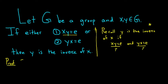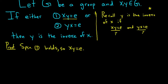Proof. We'll start by supposing that one holds. So suppose xy is equal to E. We're going to be very careful in this proof and justify every detail. Now we have to show that y is the inverse of x, which means we have to show that yx is equal to E. We've already got xy = E, we just need to show yx = E.